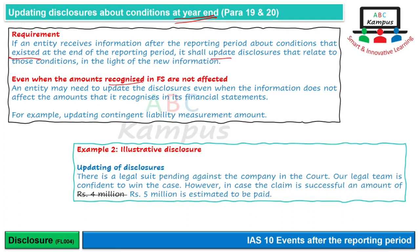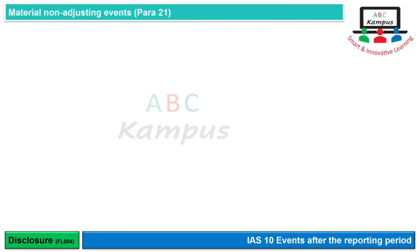Illustrative disclosure: contingent liability کے note کو update کر دیں گے — 'There is a legal suit pending against the company in the court. Our legal team is confident to win the case. However, in case the claim is successful, an amount of rupees 5 million is estimated to be paid.' تو آپ disclosures کو update کر دیتے ہیں چاہے ان disclosures کے updation کا تعلق کسی recognized amount سے نہ ہو، لیکن یاد رکھیں کہ آپ صرف انہی چیزوں کو update کریں گے جو year end پر exist کرتی تھیں، یعنی adjusting event سے related.